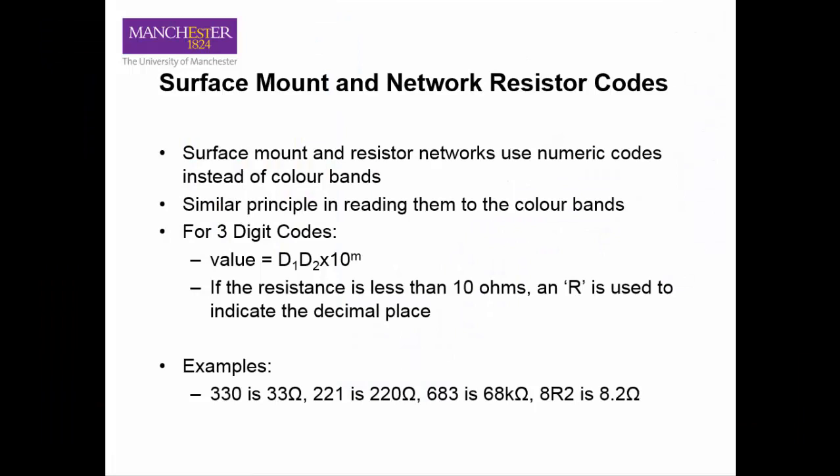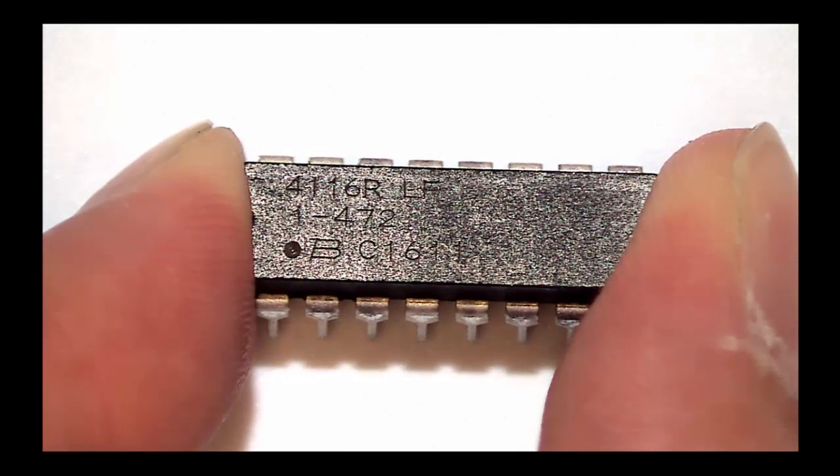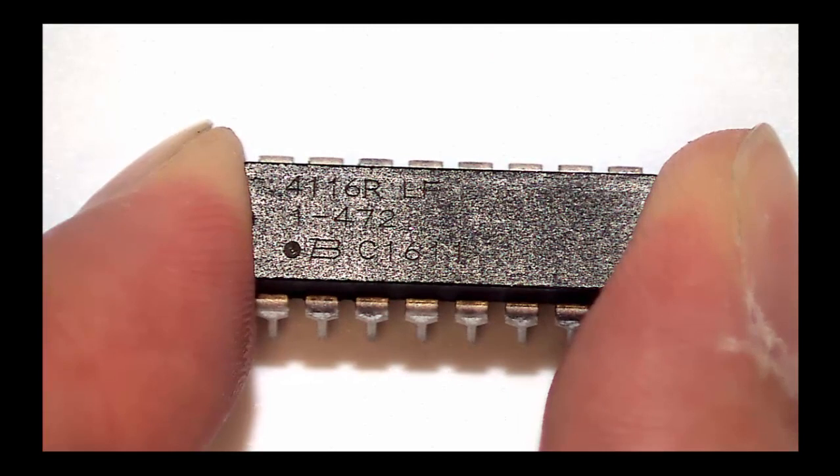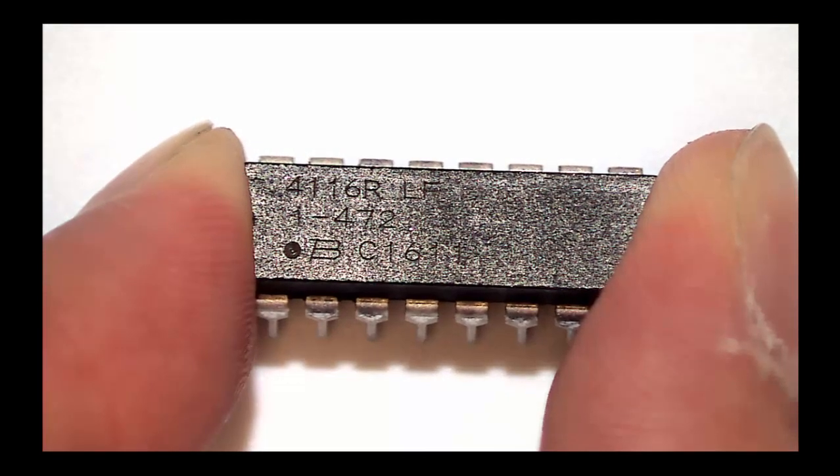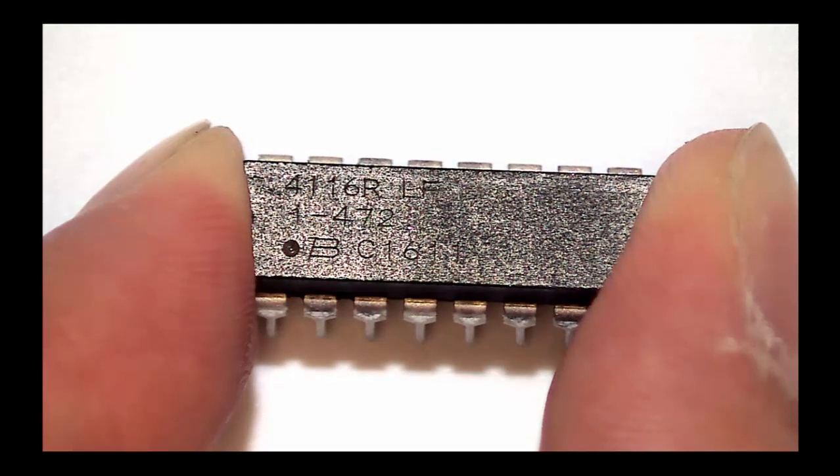Resistor networks and surface mount resistors do not use colour codes. Instead, they use numeric labels. However, the principle is still the same. For a three number code, the first two numbers are significant figures, and the last is the multiplier. In this example, the resistor network has the code 472. The 4 and 7 are significant figures, and the 2 is the multiplier, one number of zeros. So the resistor value is 4700 ohms, or 4k7.